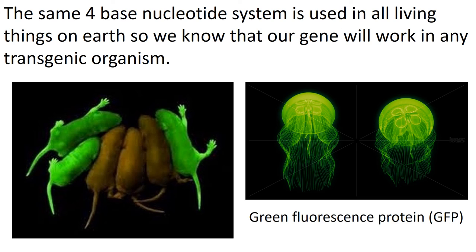All life on Earth, from bacteria up to blue whales, uses the same four-base nucleotide system — A, T, C, G. The benefit of that is we know our gene is going to work in any organism, because it's all read the same way using the same genetic material. This is why we can take a GFP protein — a green fluorescent protein — from a jellyfish, insert it into a mouse, and know it's going to work. And that's genetic engineering — thank you for watching.